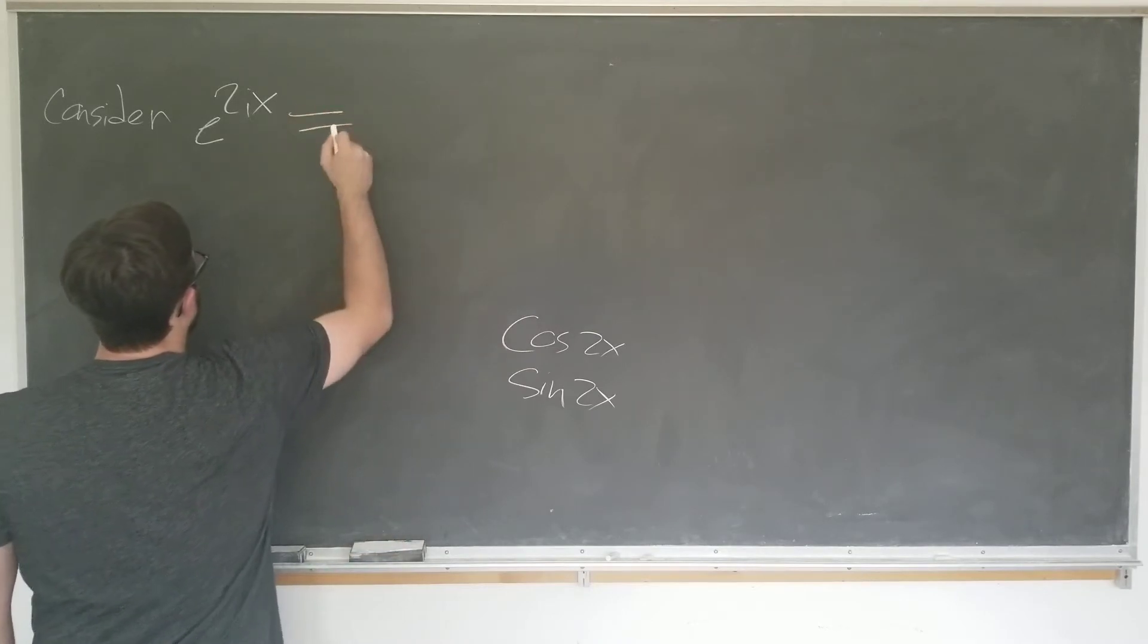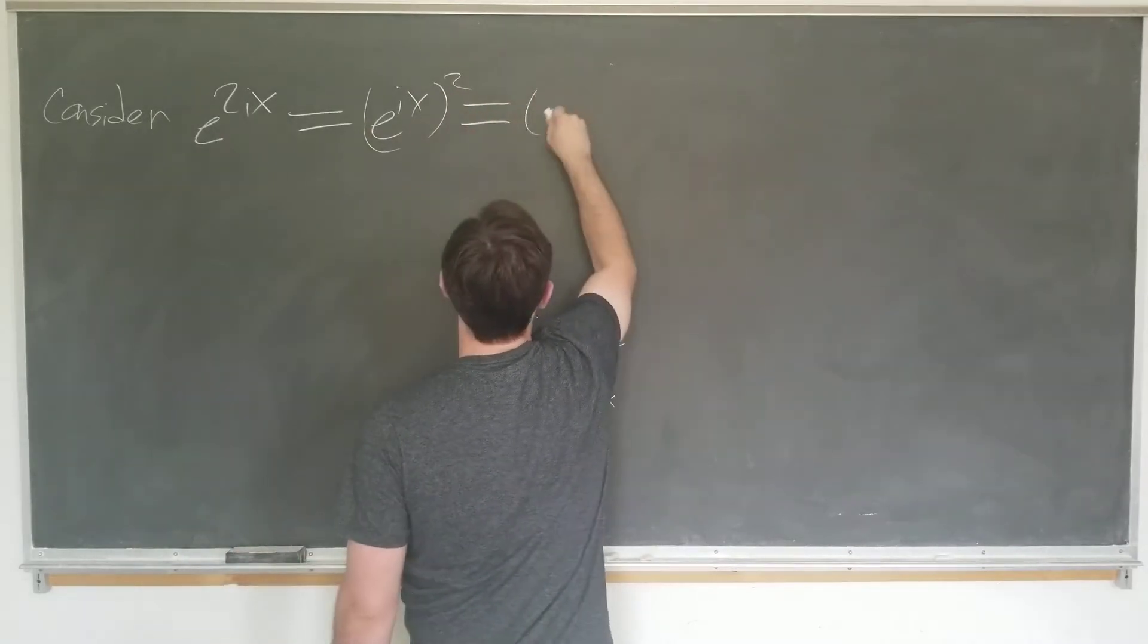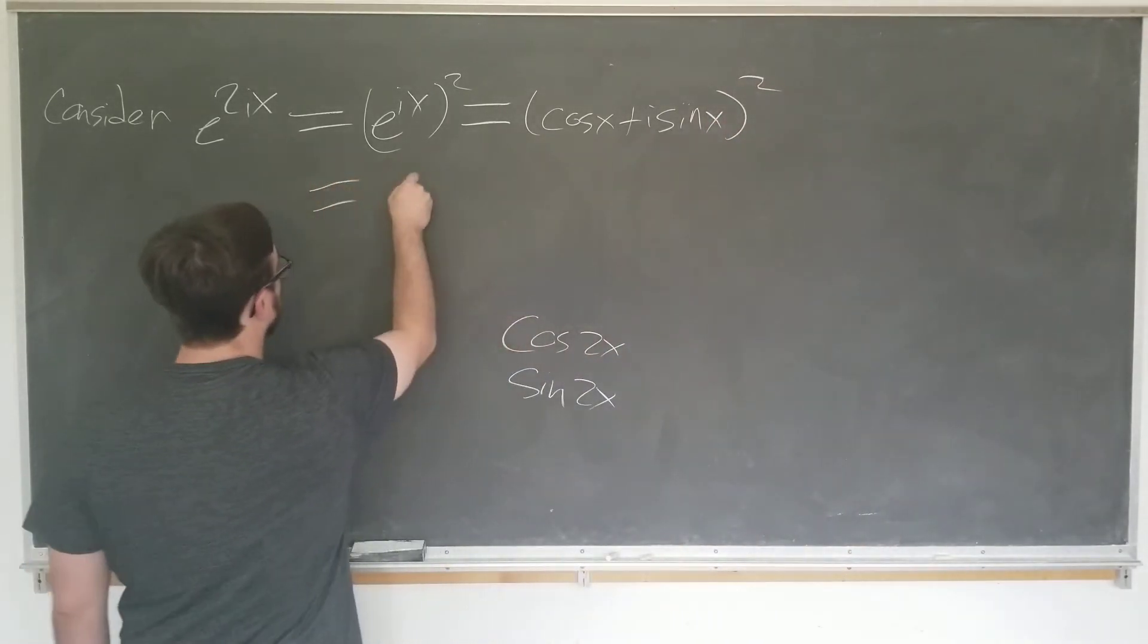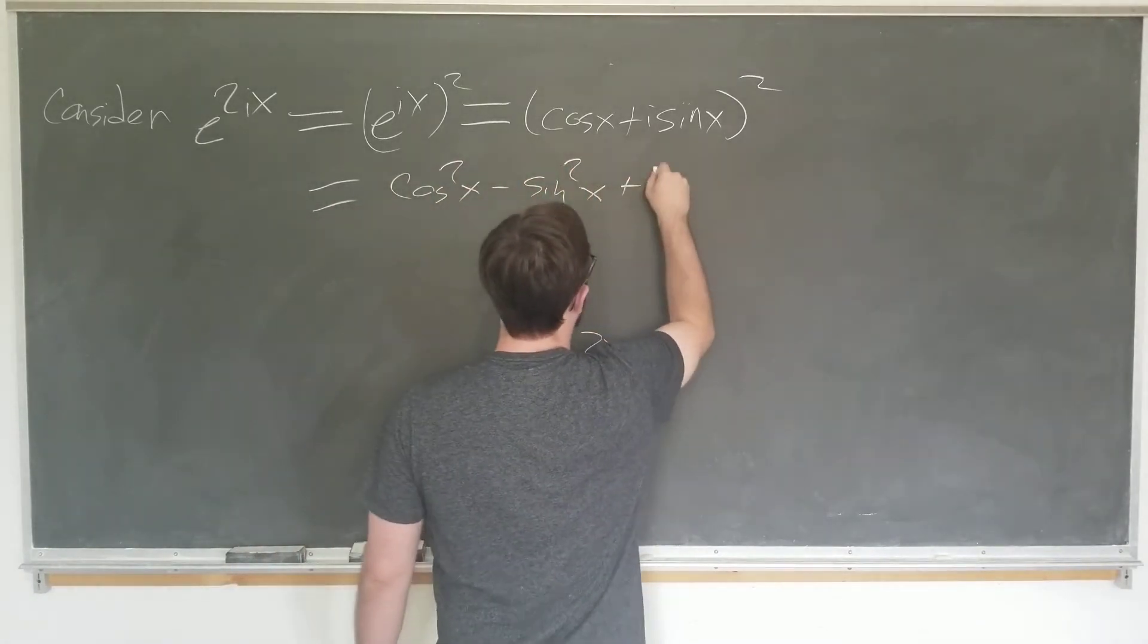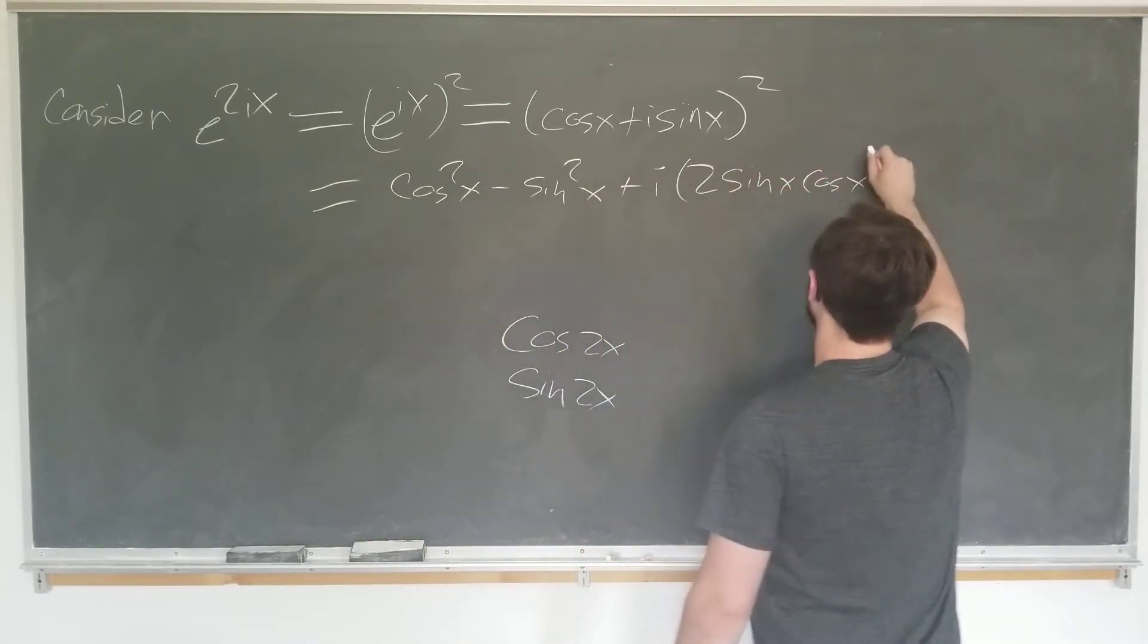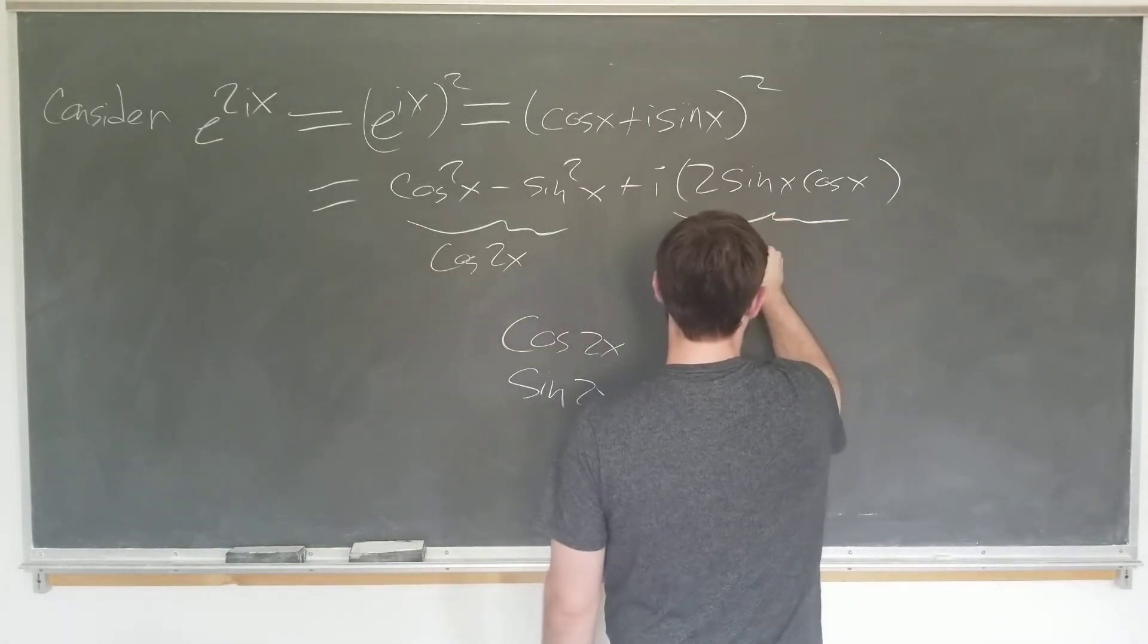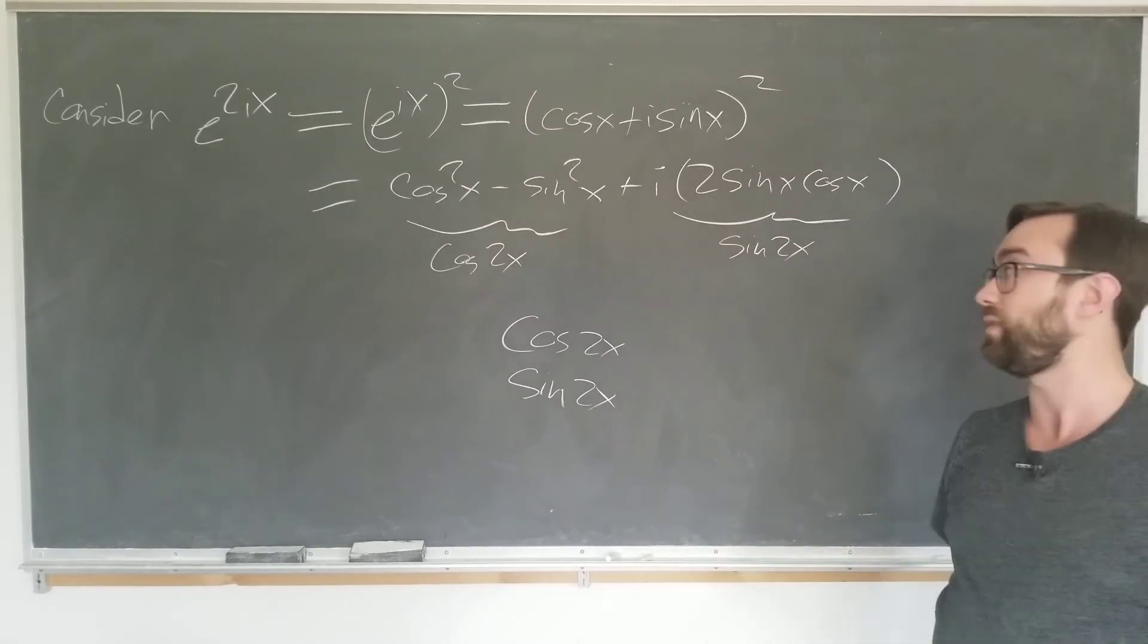By the properties of exponentiation, this is equal to e to the ix squared, which allows us to use Euler's formula. Score that bad boy now. It's equal to cosine squared x minus sine squared x plus our complex part where we have 2 sine x cosine x. And there you have it. We're done. So, this is actually cosine 2x. This is actually sine 2x. I don't think there exists a faster or easier method to derive these equations.